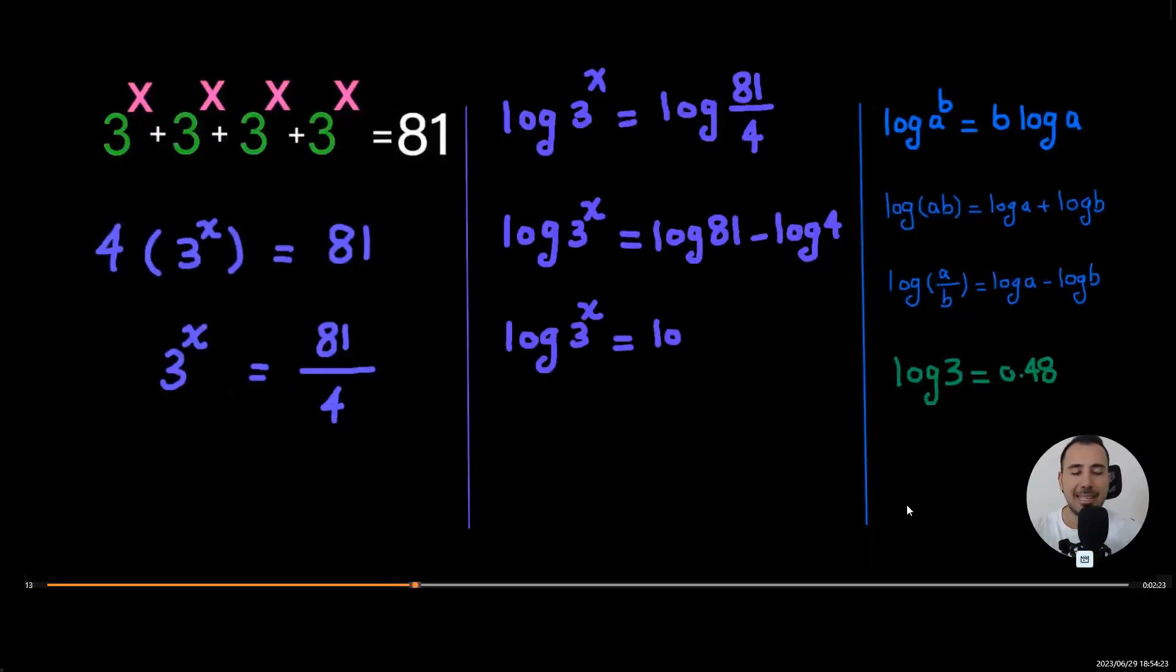Next, we're going to write 81 as 3 to the 4th power and 4 the same as 2 squared. Now we're going to use this rule. Here, we know that the exponent can come to the front. So let's just do that.